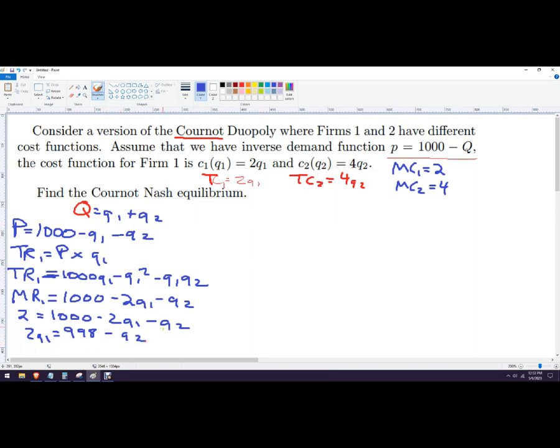And then I'm going to write this one up here. And I'm going to write it in black, so it's easier to see. Just divide through by 2. So firm 1's reaction function is this. It is 499 minus 1 half Q2. You could write that as 0.5 also. So we've got half of it. Now we just need to get firm 2's reaction function.